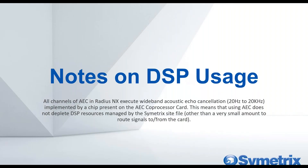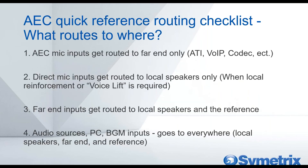A quick note on DSP usage: all channels of AEC in the Radius NX execute wideband acoustic echo cancellation from 20 Hz to 20 kHz, implemented by a dedicated chip on the AEC co-processor card. This means using AEC does not deplete any DSP resources at all — it doesn't take anything away from the rest of the Composer site file's DSP processing percentage.